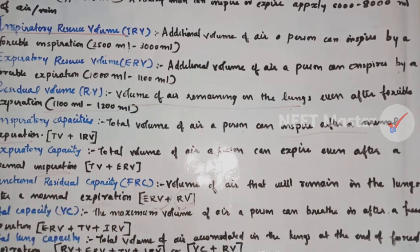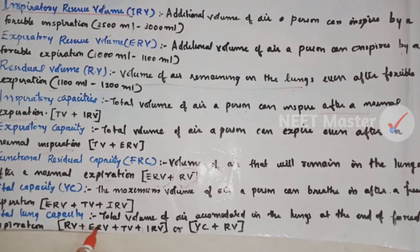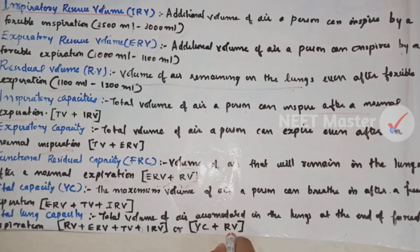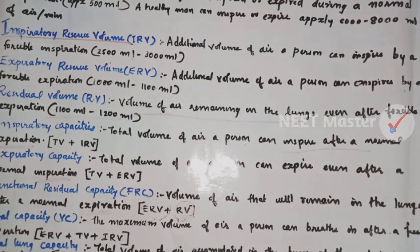Total lung capacity, TLC, is the total volume of air accommodated in the lungs at the end of a forced inspiration. After a forced inspiration, the total volume of air in the lungs is TLC. That means TLC equals RV plus ERV plus TV plus IRV — vital capacity plus residual volume.